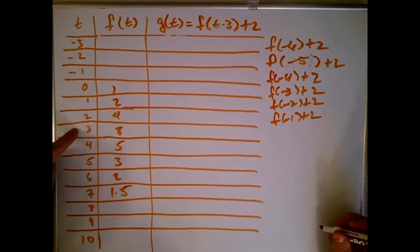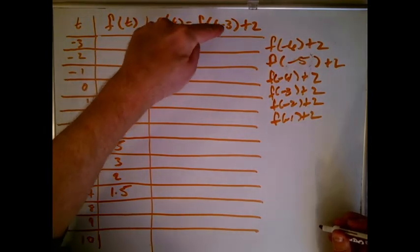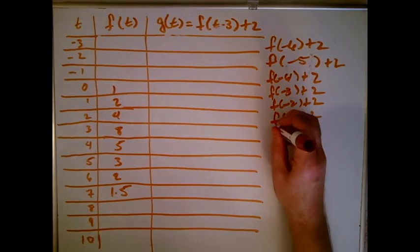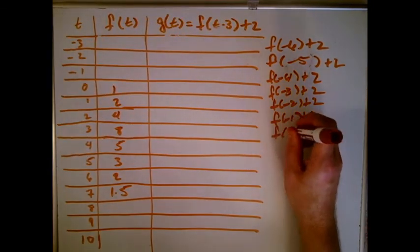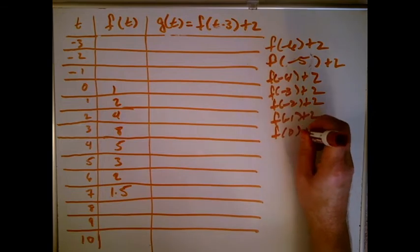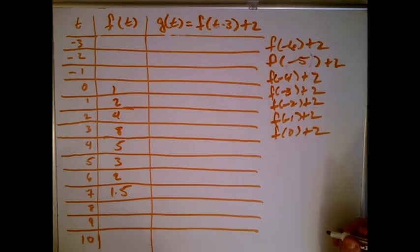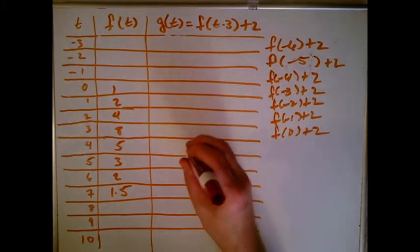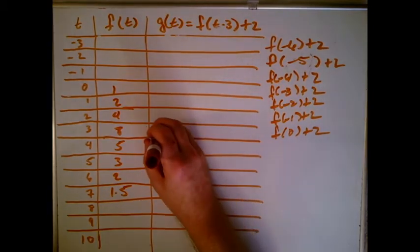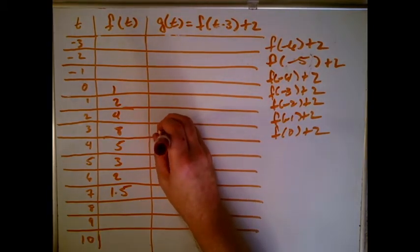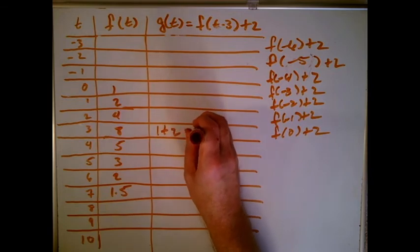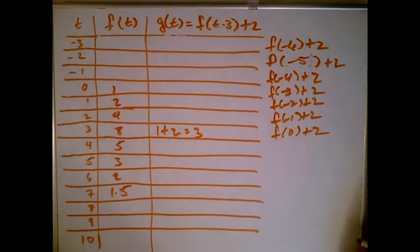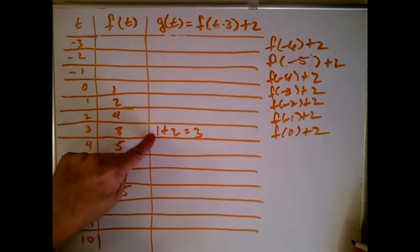When t is 3, I plug in 3 and get f(0) + 2. This is the first thing I can do! I know that f(0) = 1, so I get 1 + 2 = 3. That value came directly from f(0).